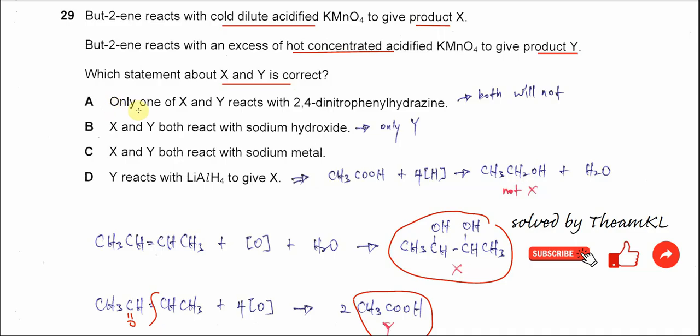For A, only one of X and Y reacts with 2,4-DNPH. 2,4-DNPH is for ketone and aldehyde. So the X and Y, they are not ketone or aldehyde. So both will not react. So A is not the answer.